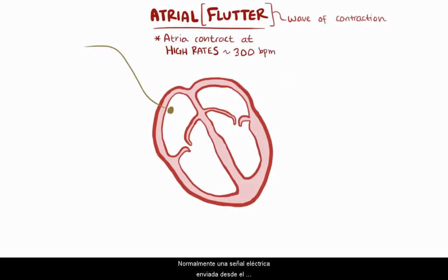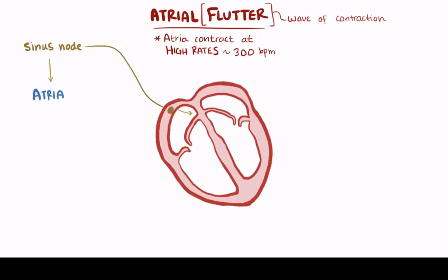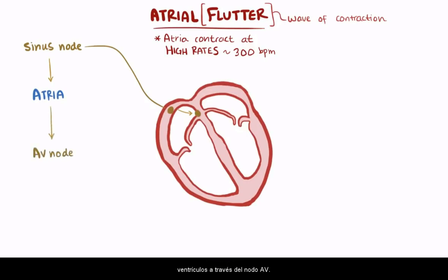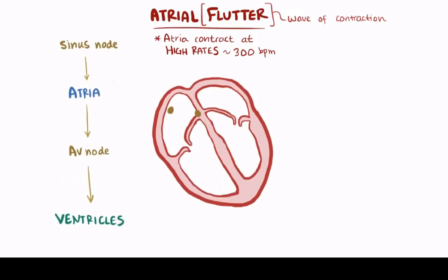Normally, an electrical signal is sent out from the sinus node in the right atrium. It then propagates out through both atria very fast, causing the atria to contract. Usually that signal moves in one direction — from the atria to the ventricles through the AV node — and then moves down to the ventricles, causing them to contract shortly after. After each ventricular contraction, the ventricle has to wait for another signal from the sinus node.